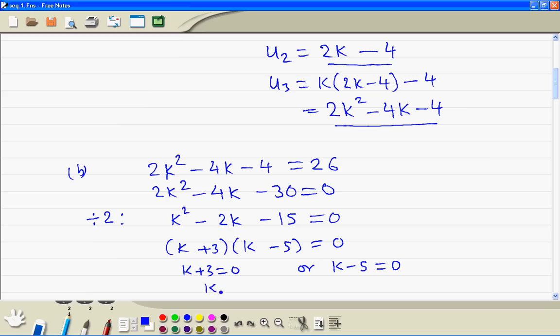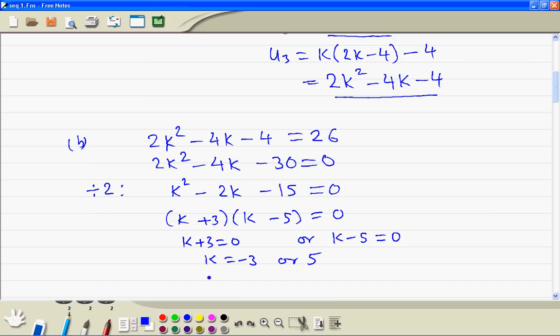This gives us k equal to minus 3, or 5. So we get two solutions, k is equal to minus 3 or 5.